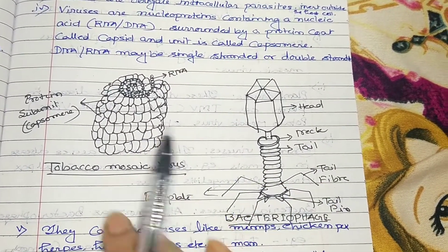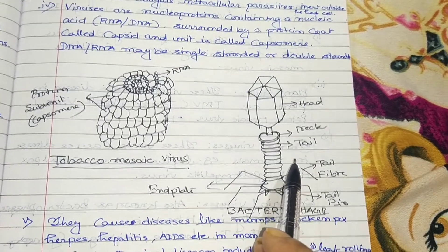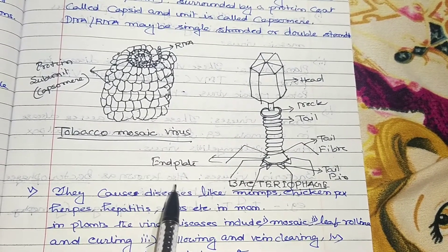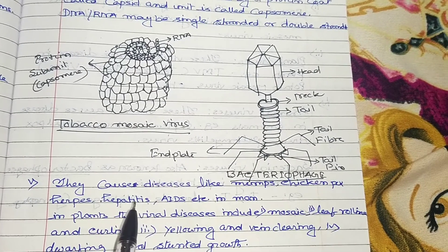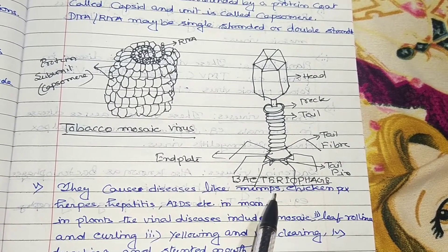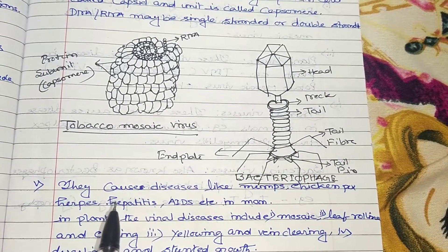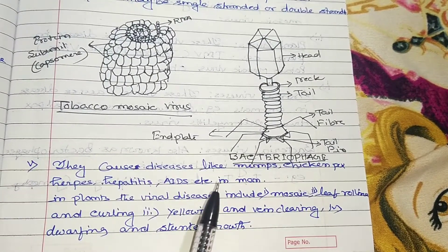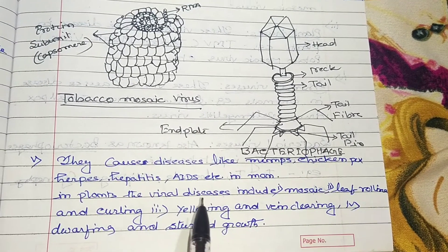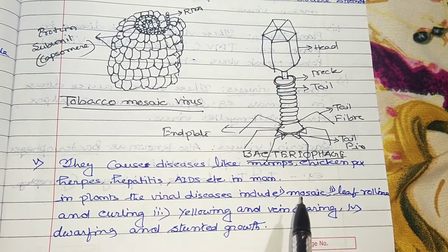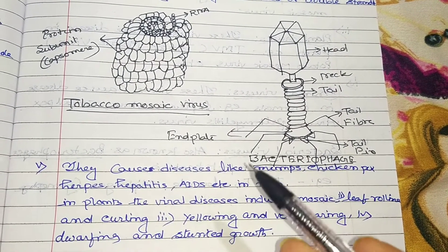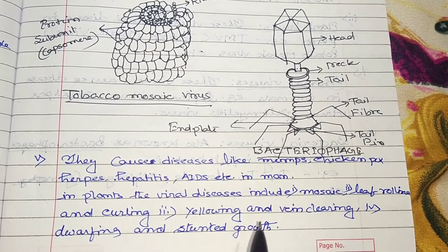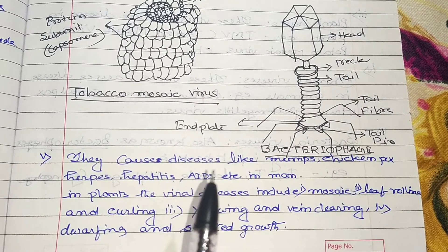The tobacco mosaic virus is a plant virus; the bacteriophage attacks bacteria. Viruses cause diseases in animals such as mumps (mumps virus), chickenpox (pox virus), herpes (herpes virus), hepatitis A, B, C, and AIDS. In plants, viral diseases include mosaic disease (like tobacco mosaic virus), leaf rolling, leaf curl, yellowing and vein clearing, and dwarfing and stunted growth.